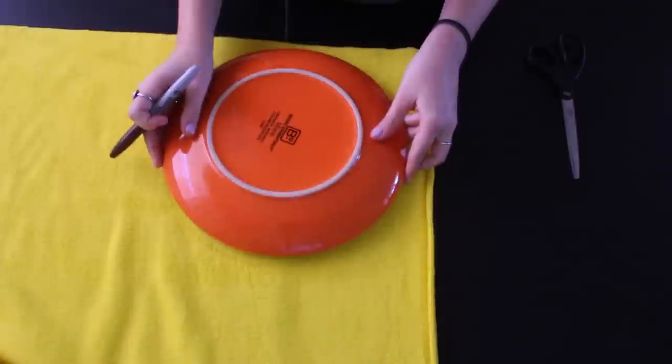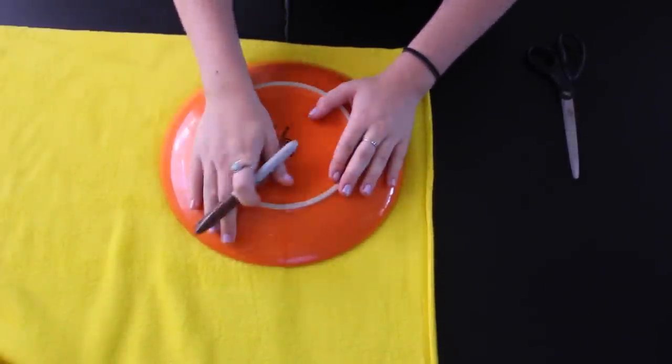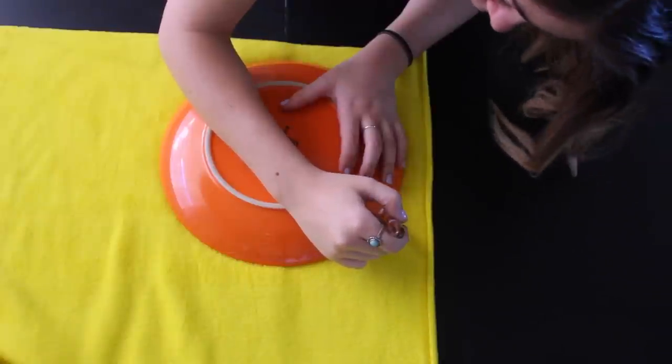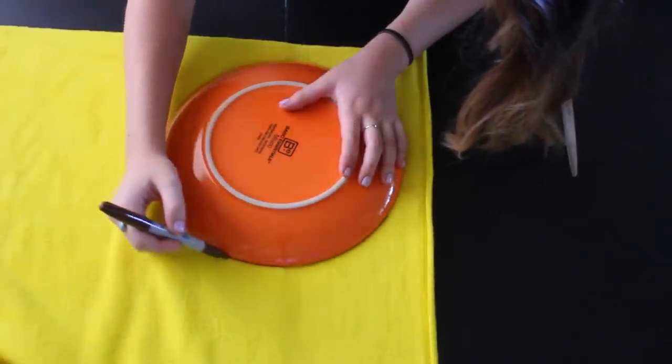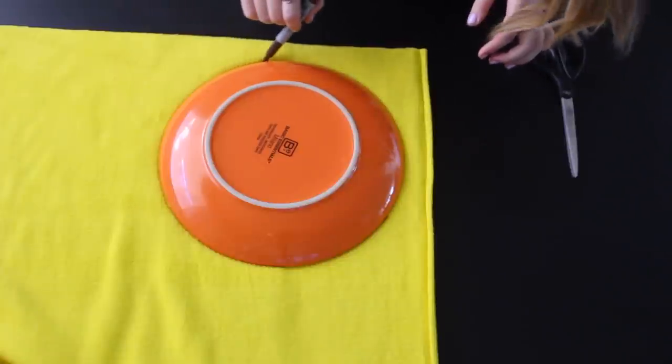So you want to start out with your yellow fabric and you want to make sure that it is doubled up. Most fabric comes that way but if not just make sure that it is doubled up so that you get the same size each time.